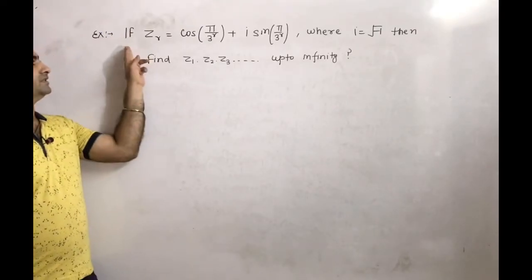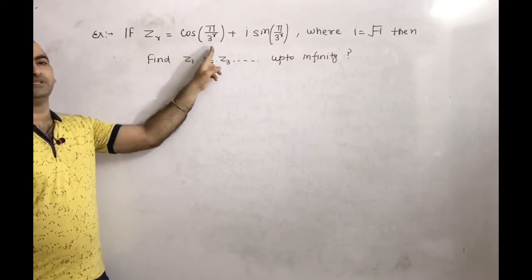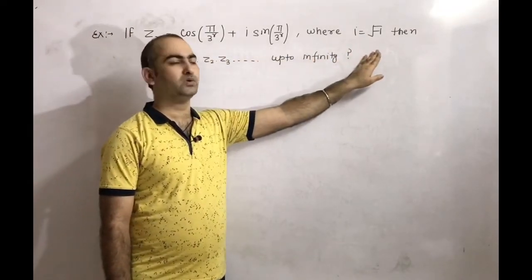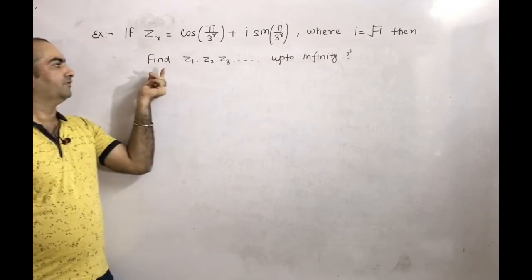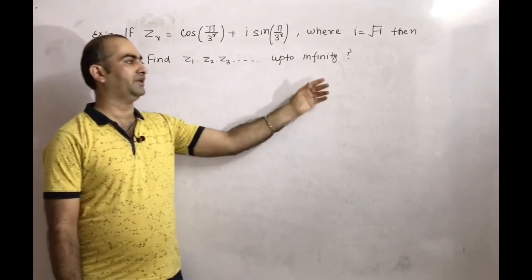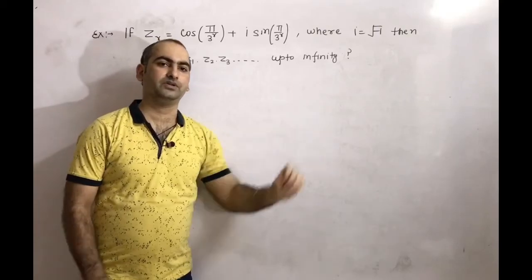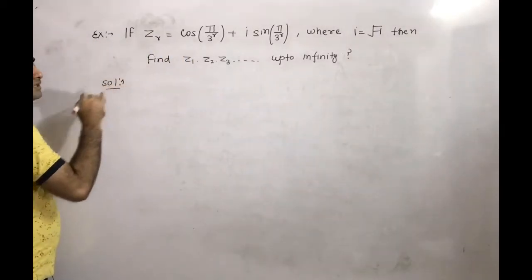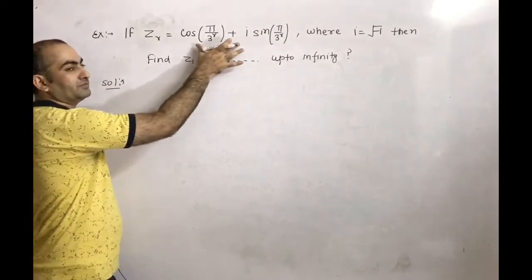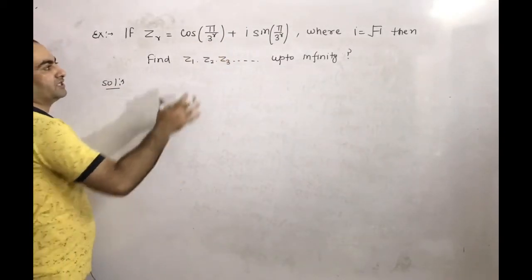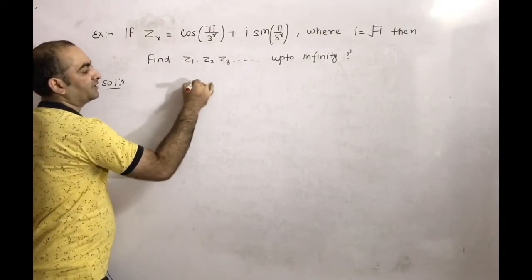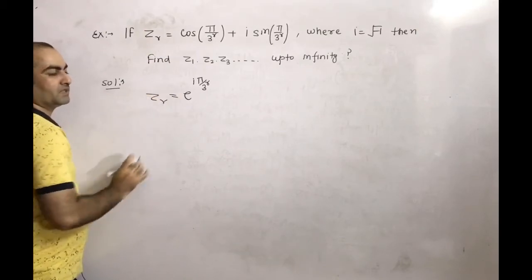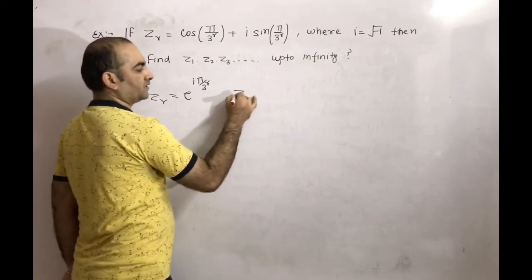The next problem: if z_r equals (cos(π/3))^r + i·sin(π/3)^r, where i equals root of minus 1, then find z₁·z₂·z₃ and so on up to infinity. Solution: z_r is nothing but e^(i·π/3)^r using Euler's formula.